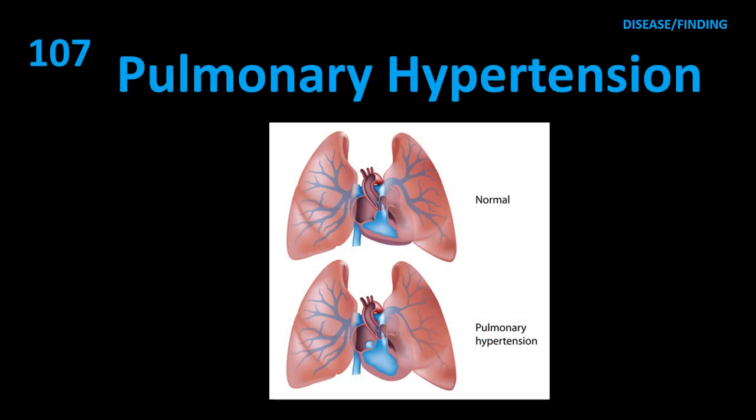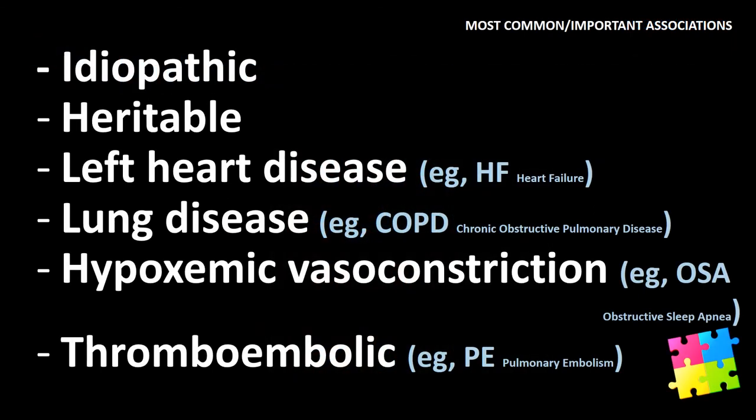Item 107: Pulmonary hypertension — causes include idiopathic/heritable, left heart disease (e.g., heart failure), lung disease (e.g., COPD), hypoxemic vasoconstriction (e.g., OSA), or thromboembolic disease (e.g., pulmonary embolism).